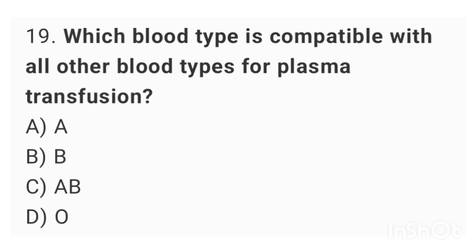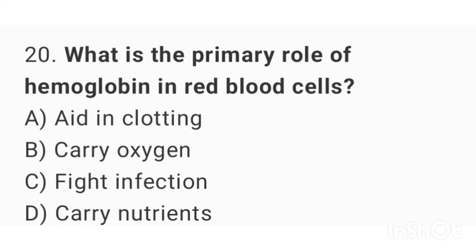Question number 19: Which blood type is compatible with all other blood types for plasma transfusion? The right answer is option C: AB. Question number 20: What is the primary role of hemoglobin in red blood cells? The right answer is option B: carry oxygen.